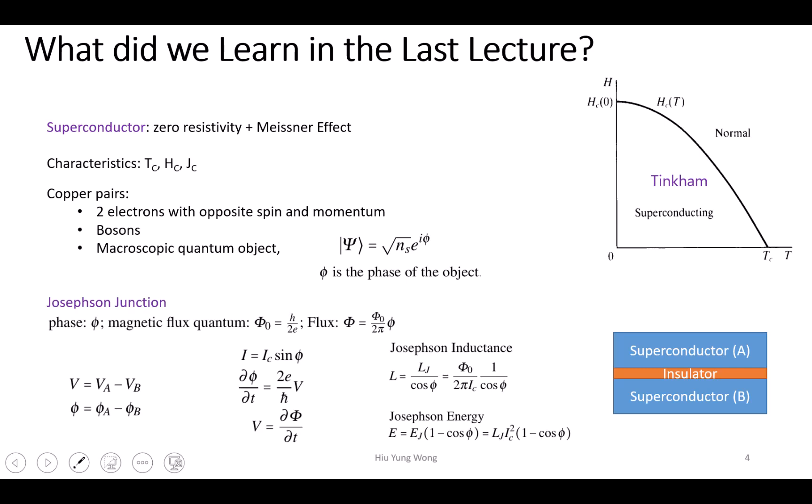Now, why do we have superconductors? Because Cooper pairs are formed by two electrons with opposite spin and momentum. They become bosons. This is a very important concept because they have spin zero, and so they can occupy exactly the same state, unlike fermions.